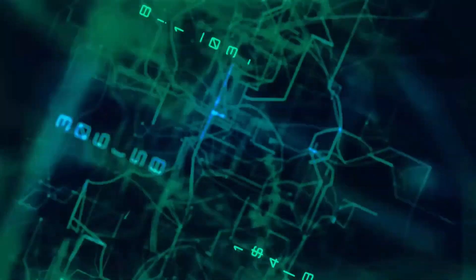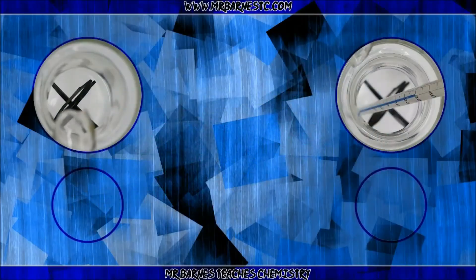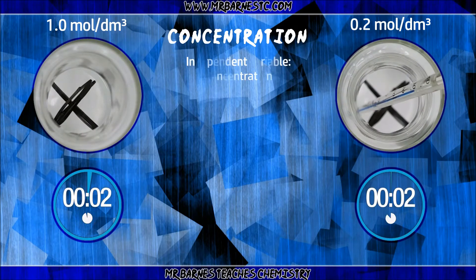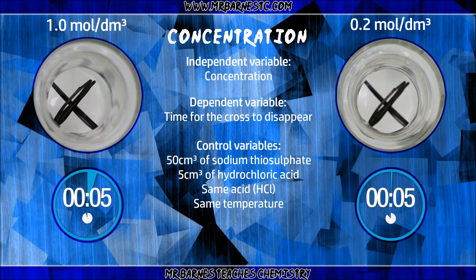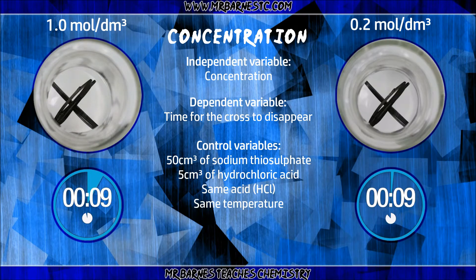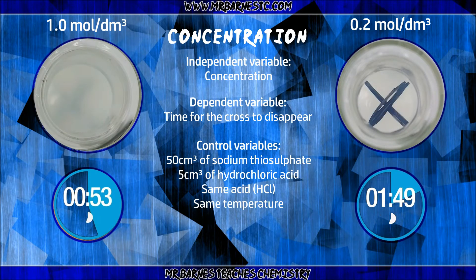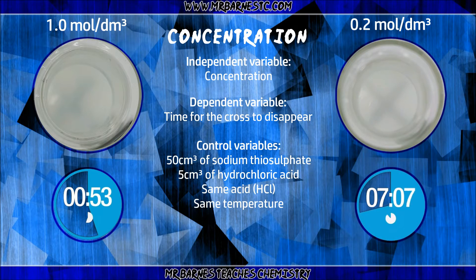If we start off looking at how concentration affects the reaction, you should realise that if you increase the concentration, the rate of reaction goes up. I've kept all the volumes the same - 50cm³ of sodium thiosulfate and 5cm³ of hydrochloric acid. All I've done is change the concentration of the sodium thiosulfate. The left one has the higher concentration and the right one has the lower concentration. It's fairly obvious that the one with the higher concentration has reacted fastest, because the cross has disappeared.